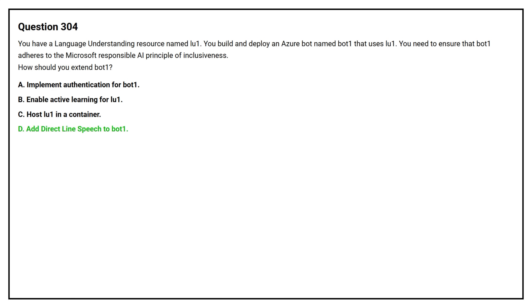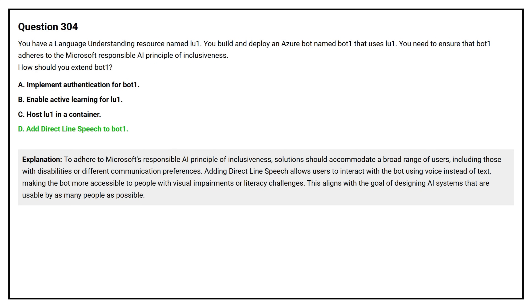The correct answer is Option D: Add Direct Line Speech to Bot1. To adhere to the Microsoft Responsible AI principle of inclusiveness, adding Direct Line Speech allows users to interact with the bot using voice instead of text, making the bot more accessible to people with visual impairments or literacy challenges. This aligns with the goal of designing AI systems that are usable by as many people as possible.